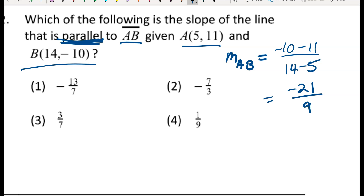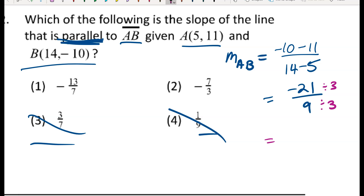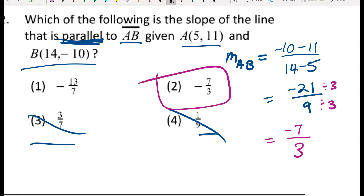I notice I don't see that in my answers, but I can rule out choices 3 and 4 because they're not negative. Both negative 21 and 9 are divisible by 3: negative 21 divided by 3 is negative 7, and 9 divided by 3 is 3. So the slope of a line parallel to AB should be negative seven over three.